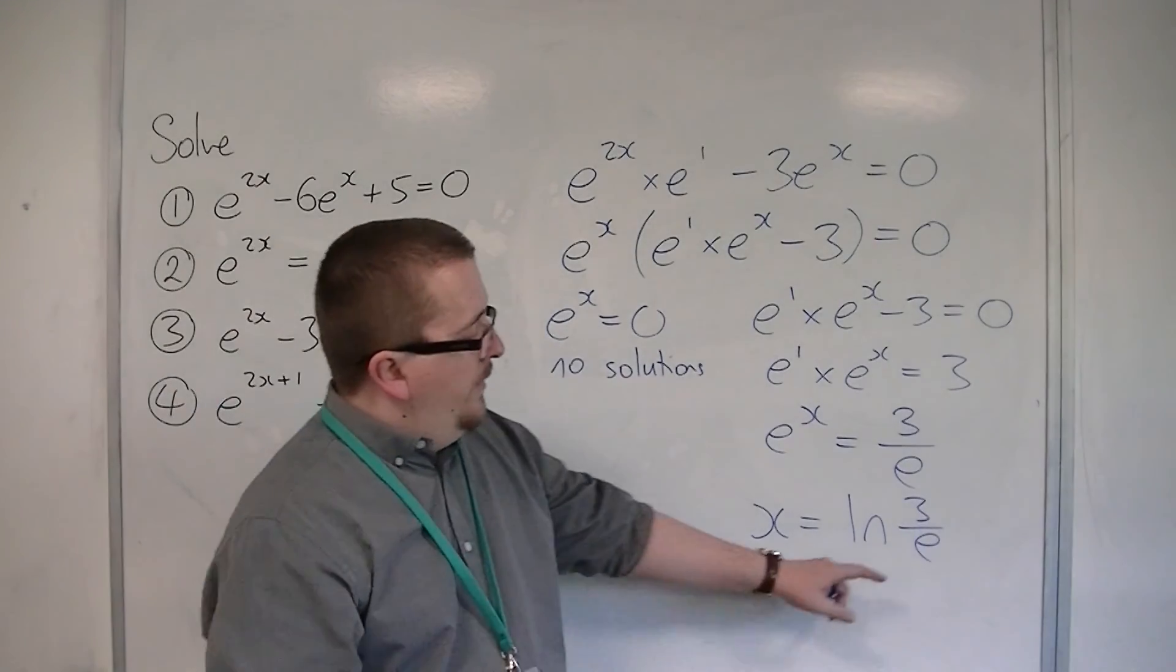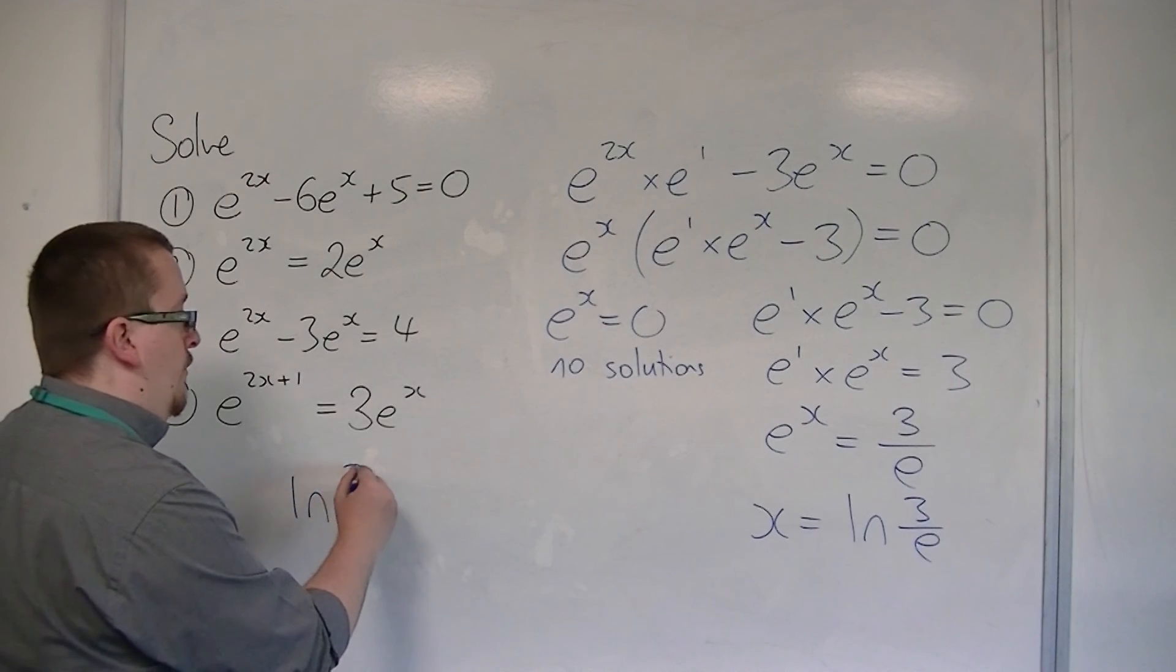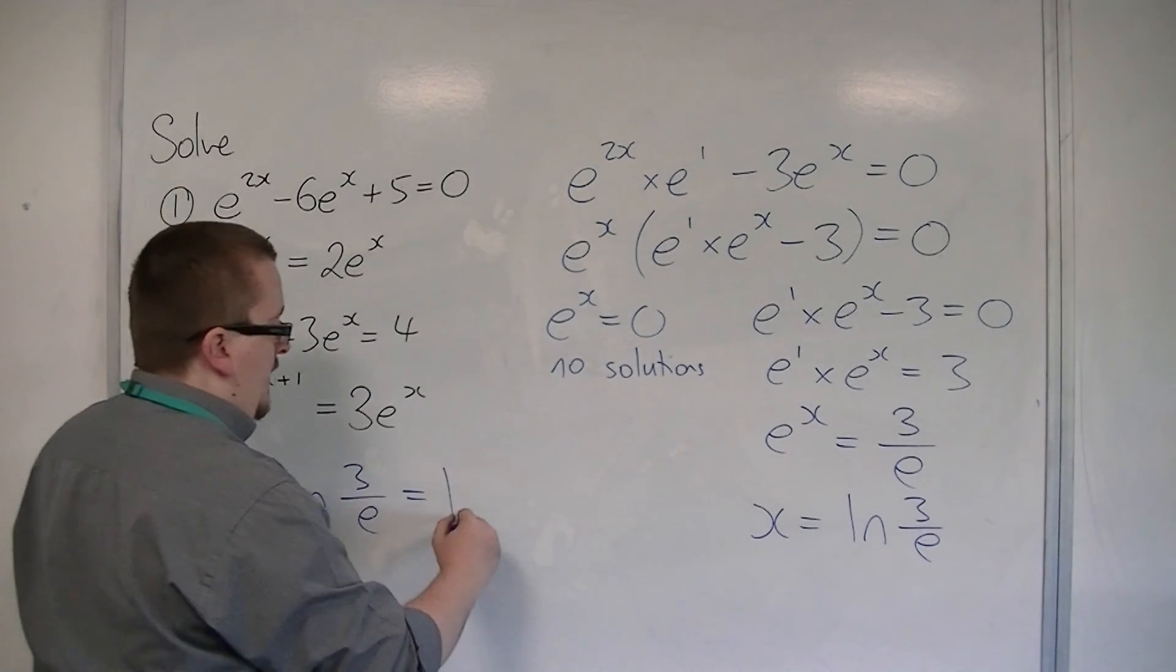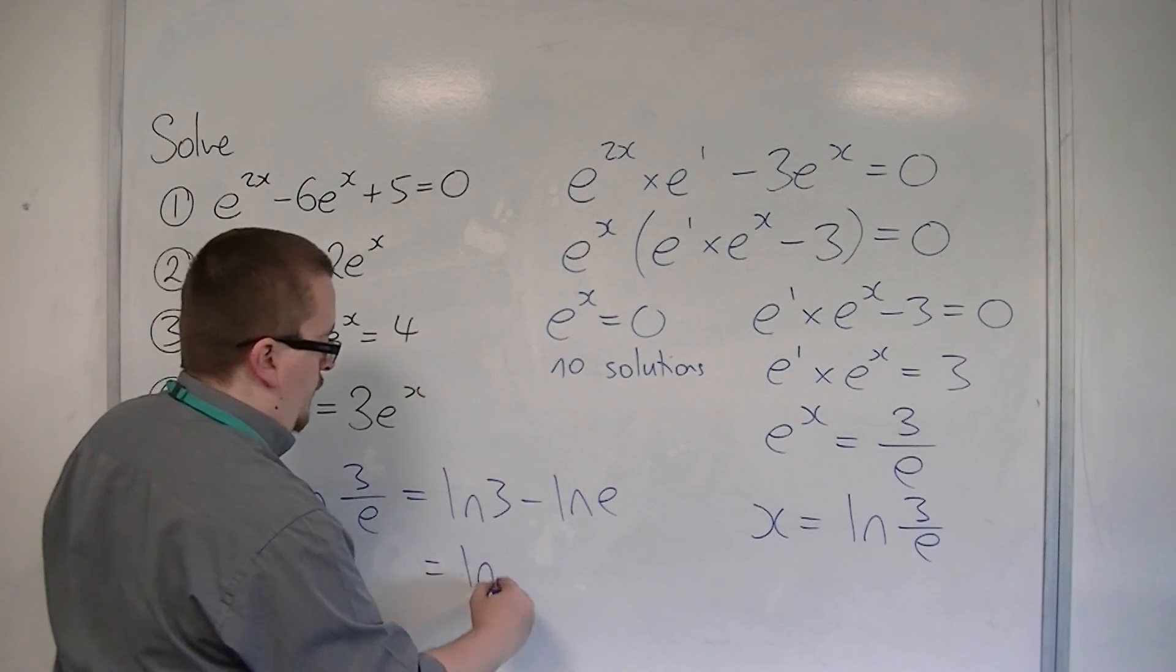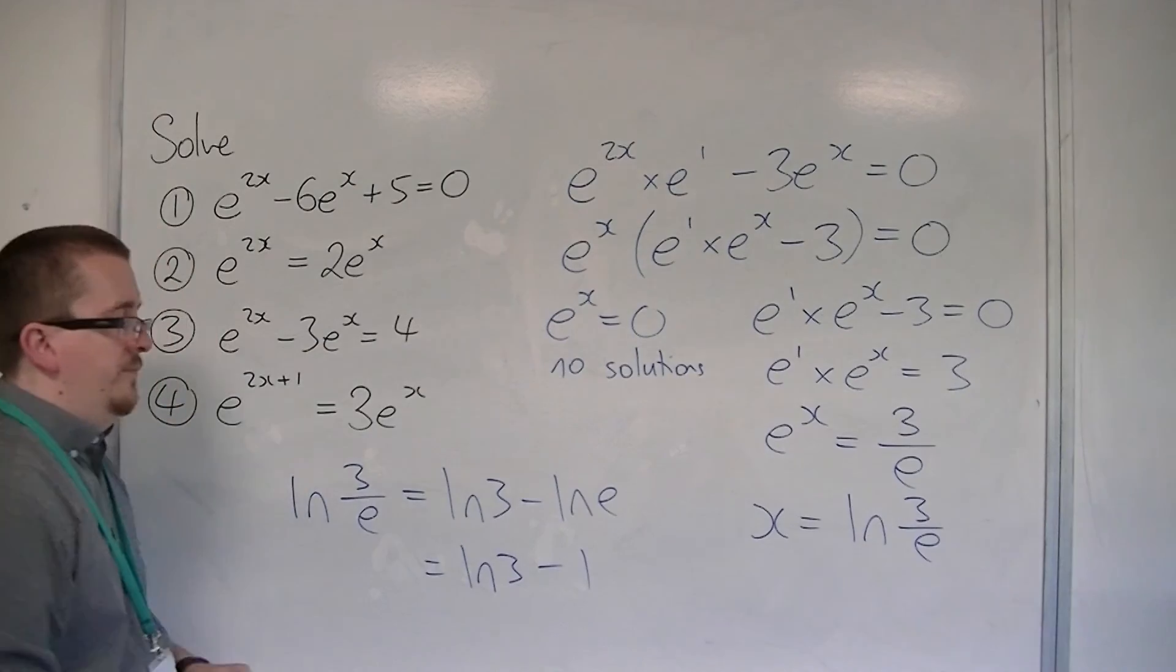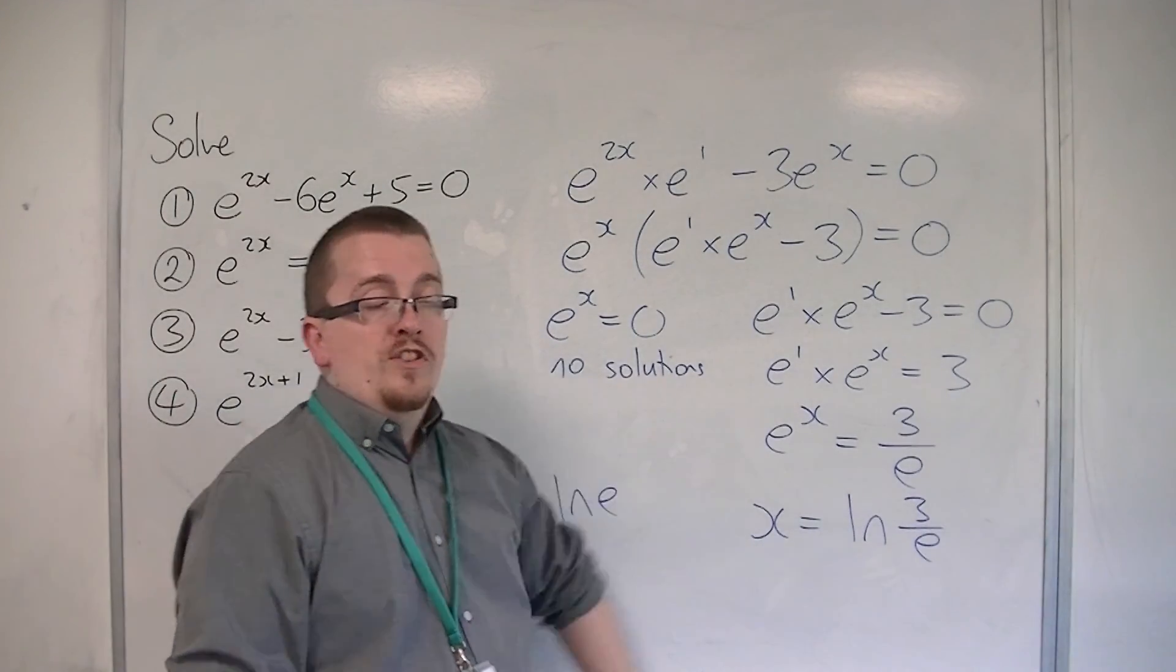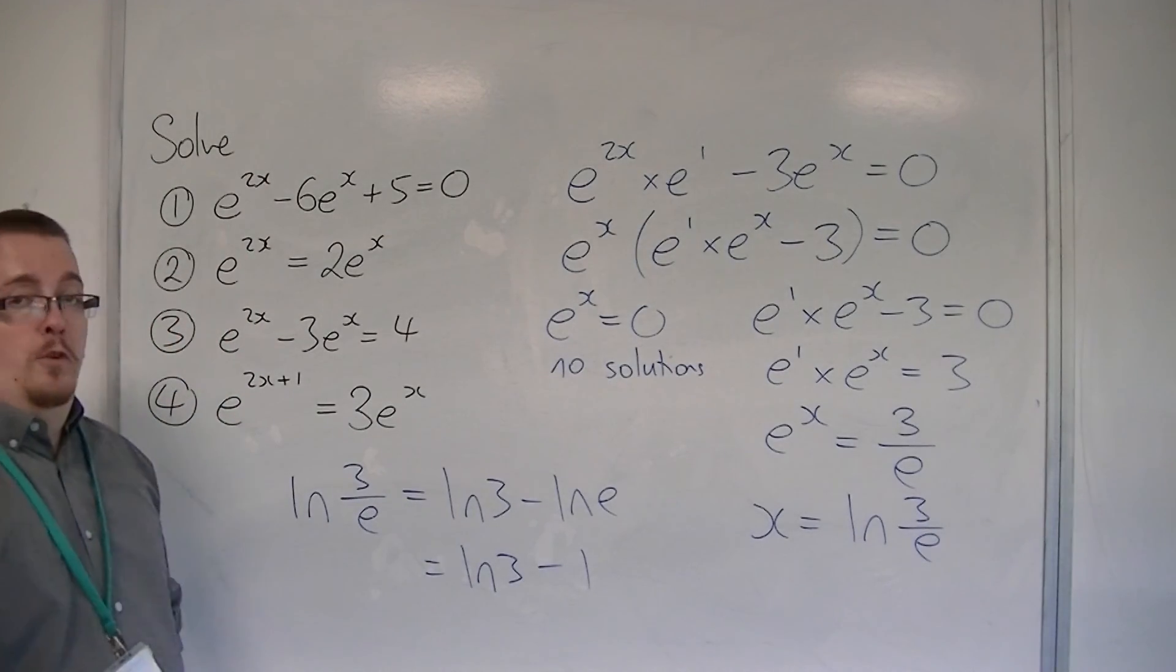Now you can simplify that if you like, because log of 3 over e, using the log law, the second log law, is log of 3 minus log of e, which is log of 3 take away 1. So that is equivalent to log of 3 over e, or you can just leave it like that. And that's how we can solve those four.